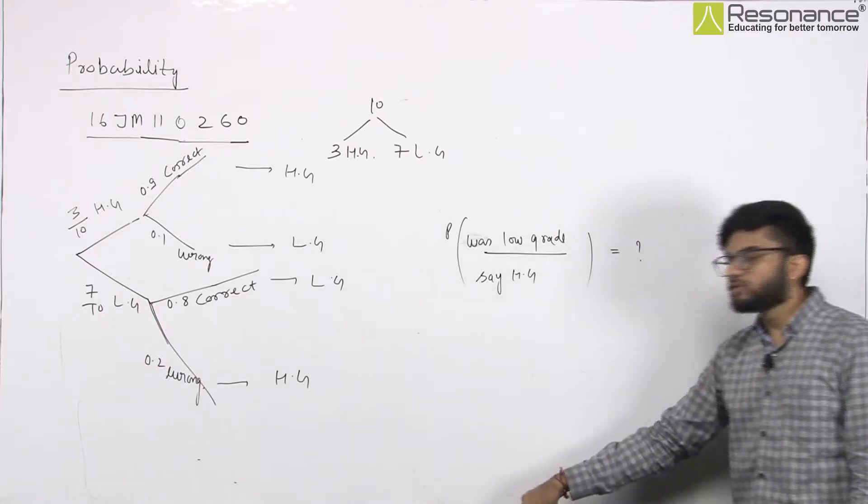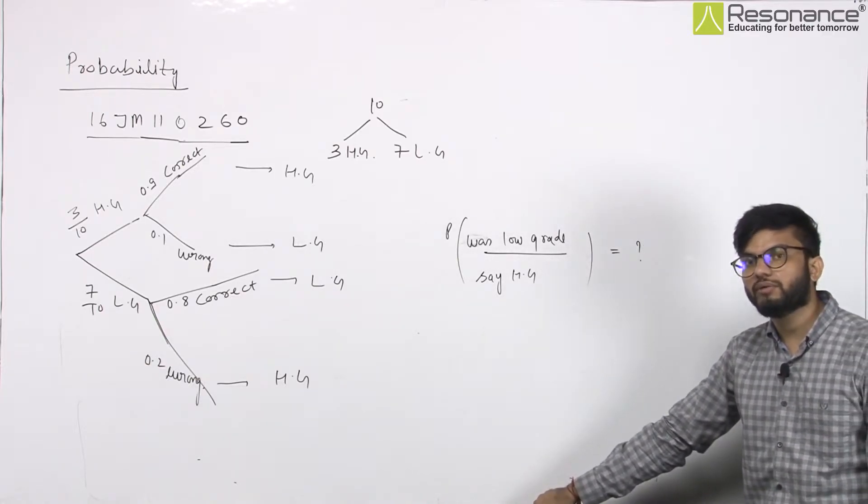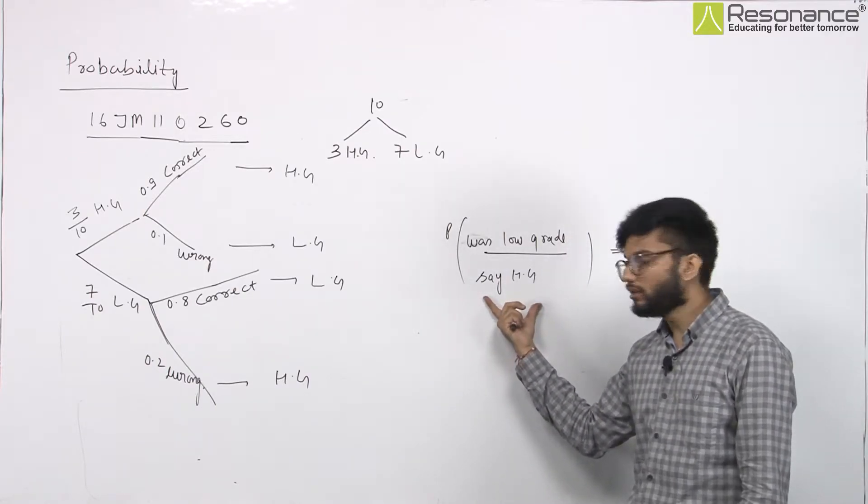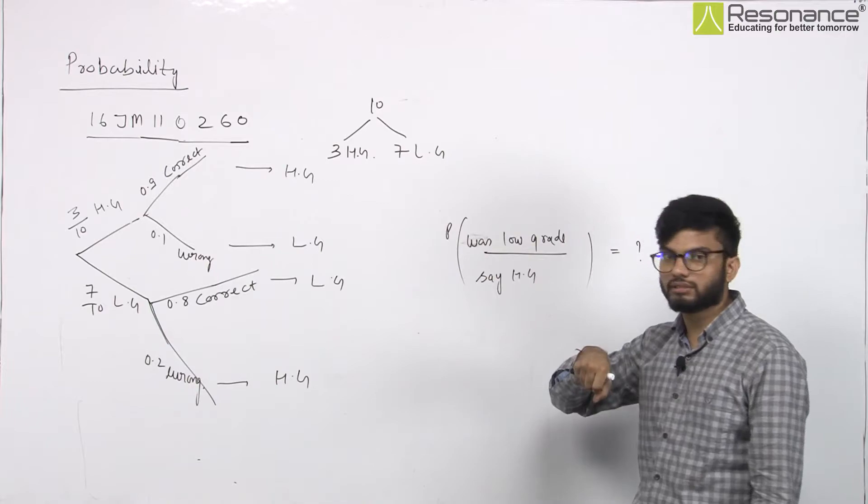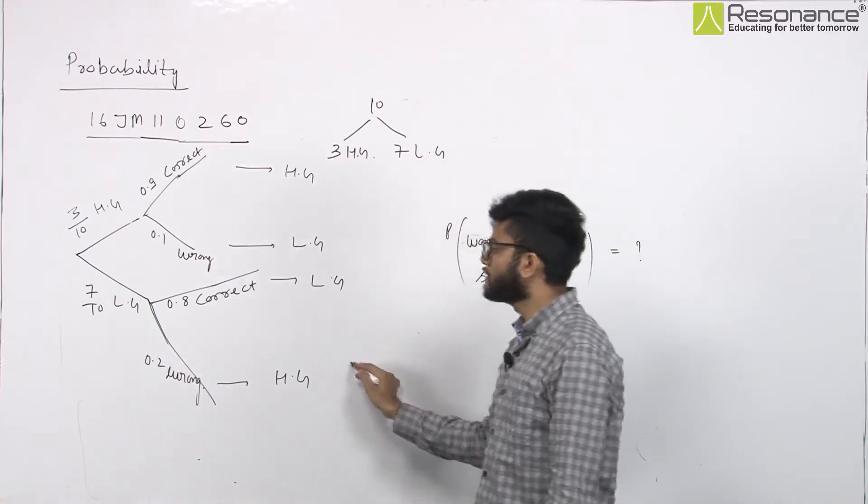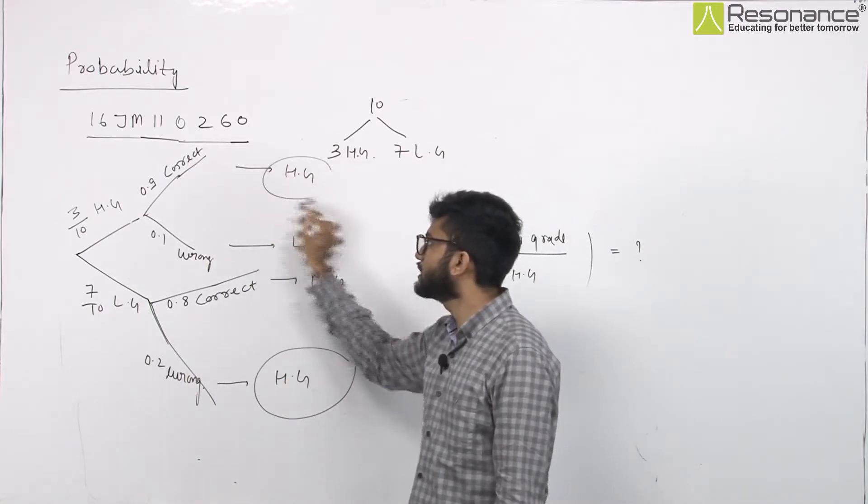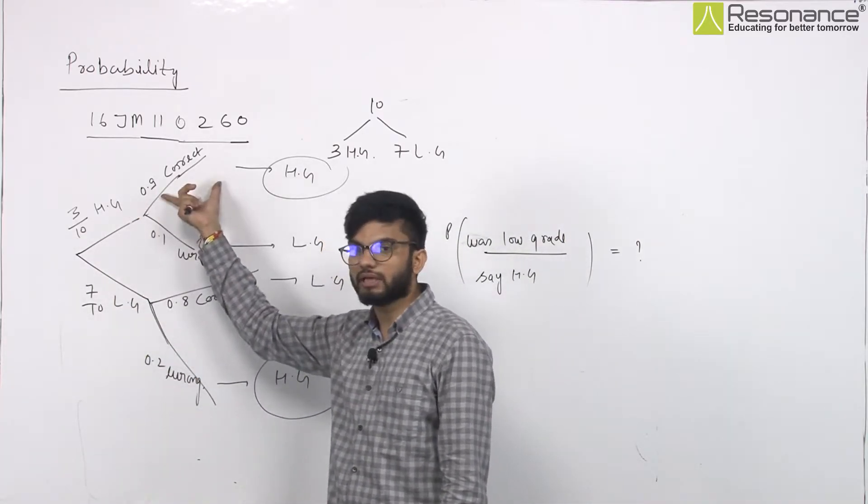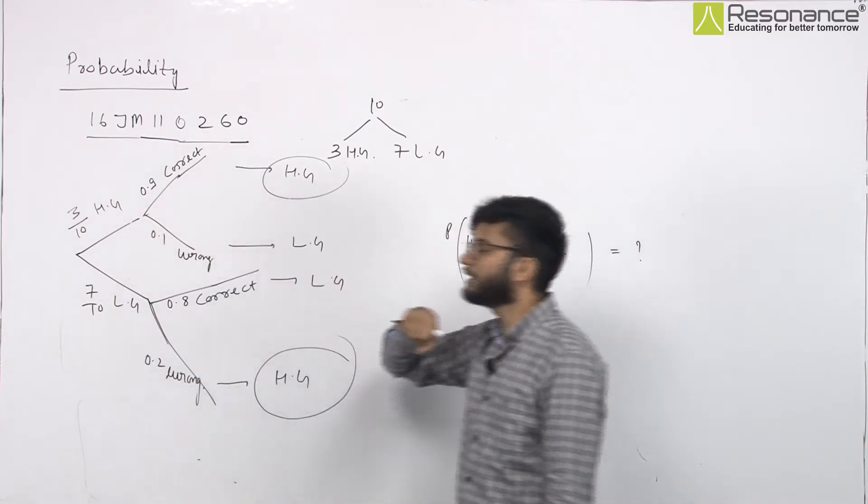So, again, the question of conditional probability. What have you said? Modi ji said that it is high-grade. What chances are low-grade? That you can think of high-grade. One this is one which happens. How did it become? That on the fact that it was high-grade, and Modi ji also told you, so it became high-grade.